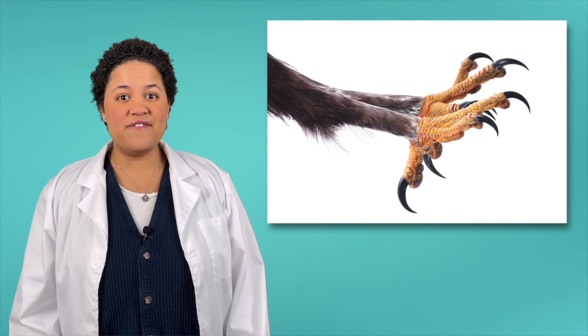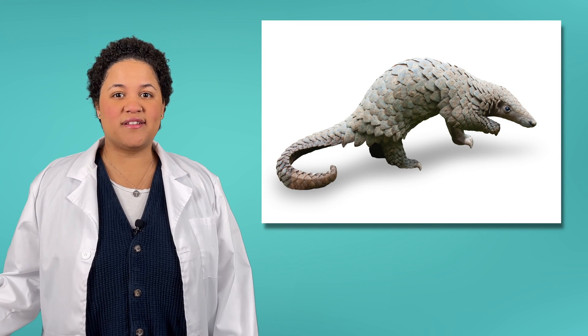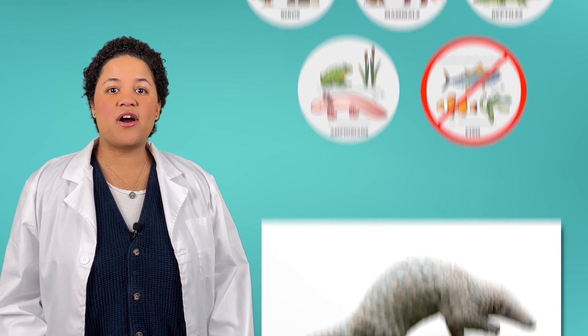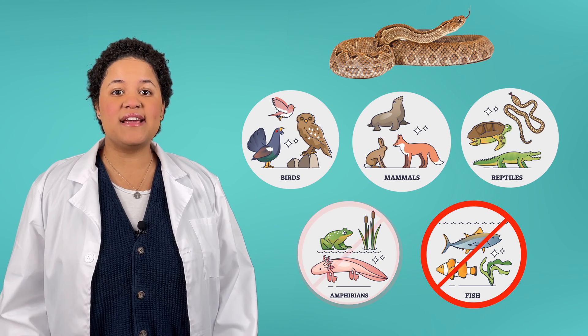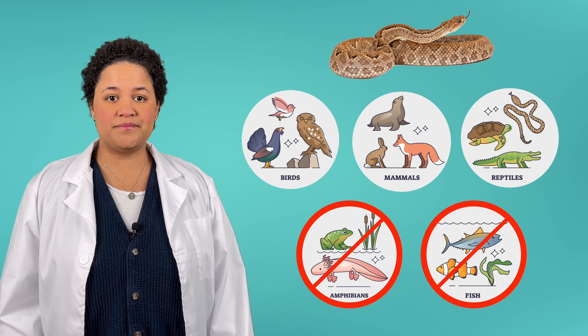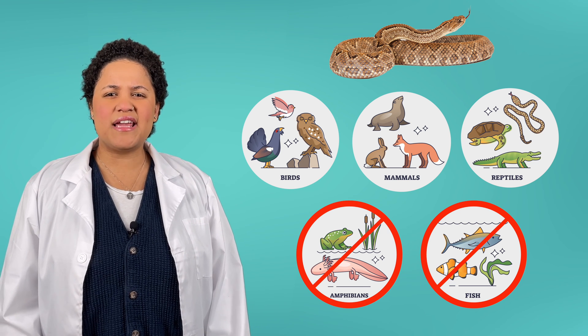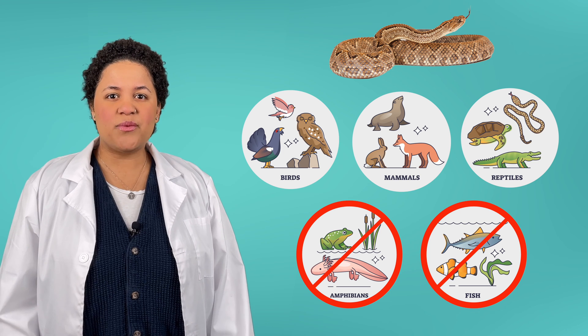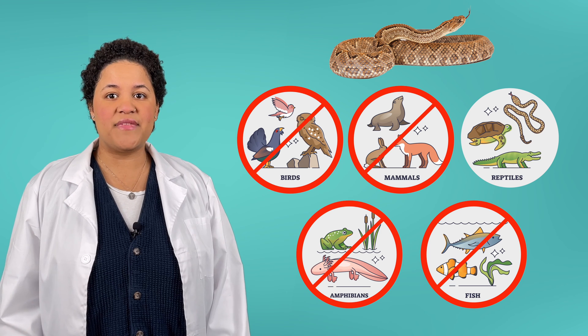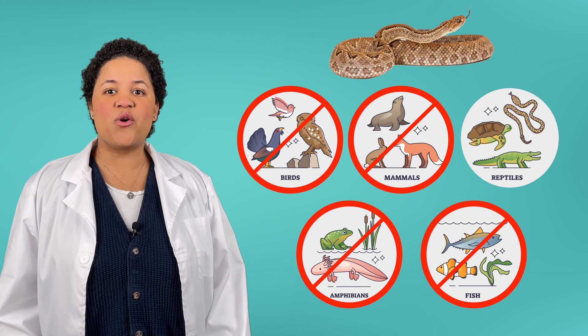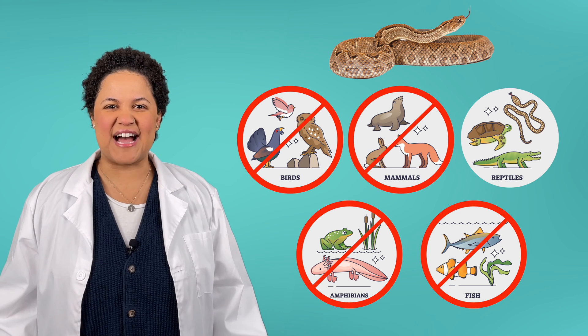Just because an animal has scales doesn't mean it's a fish. Scales can be found on birds, reptiles, and even some mammals like this pangolin. Amphibians are the only animal class who never have scales, so that means a snake is not an amphibian. But a snake is cold-blooded, so we know it can't be classified as a warm-blooded animal like a mammal or a bird. That means that this snake can only be one thing: a reptile.